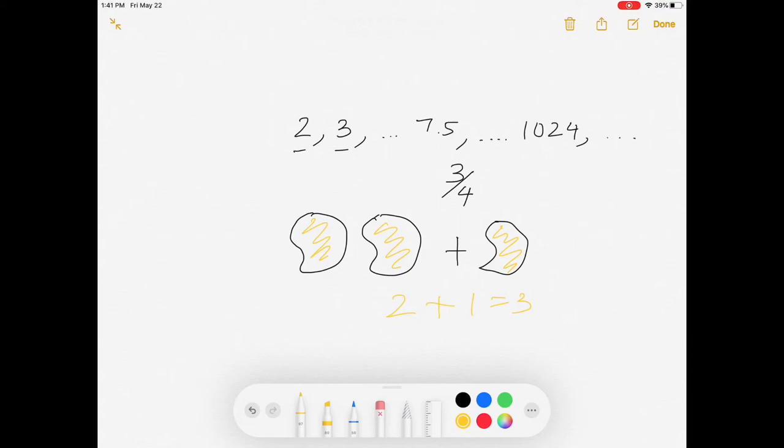I can even talk about 7.5 or any other decimal number. Maybe 7.5 is the length of a box or an object, or it's one of the dimensions perhaps.